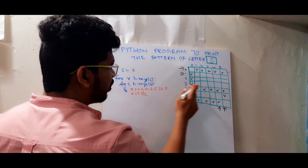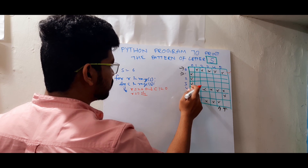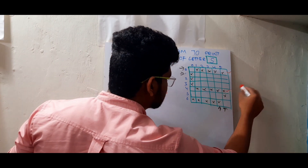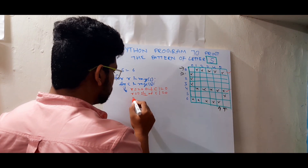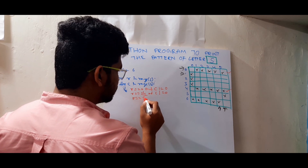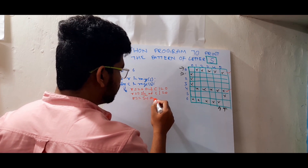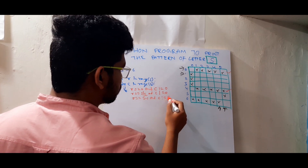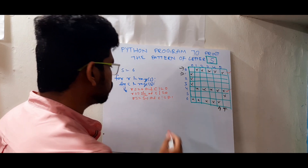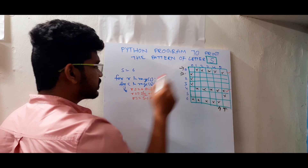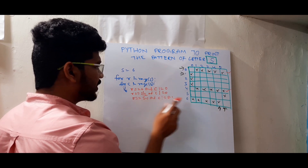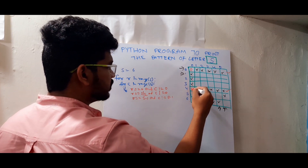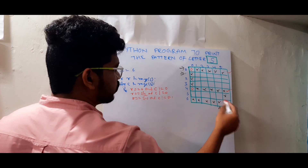For the middle row: if row equals s divided by 2, and the column should not be equal to zero — to exclude that space. For the last row: if row equals s minus one, and the column should not be equal to s minus one (the last column). So those are the three row conditions, and these exclusions handle the spaces at each corner.